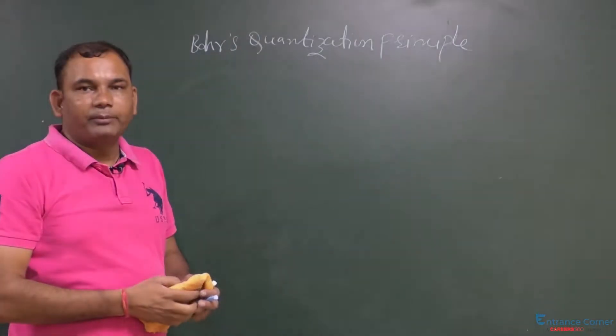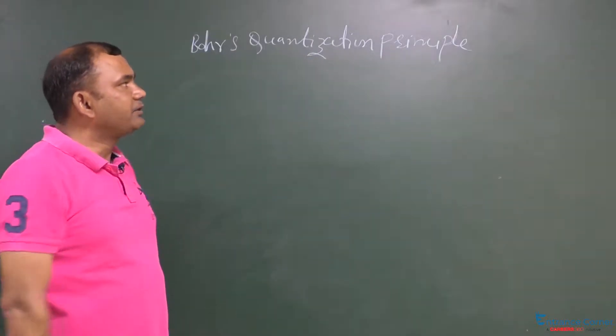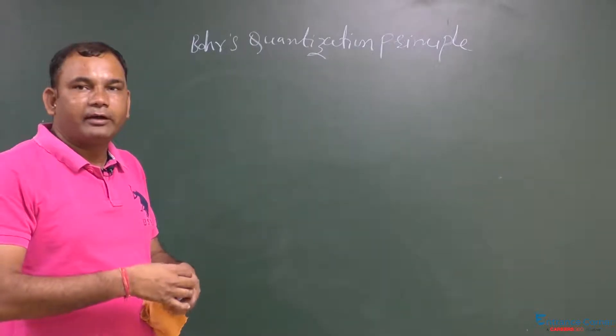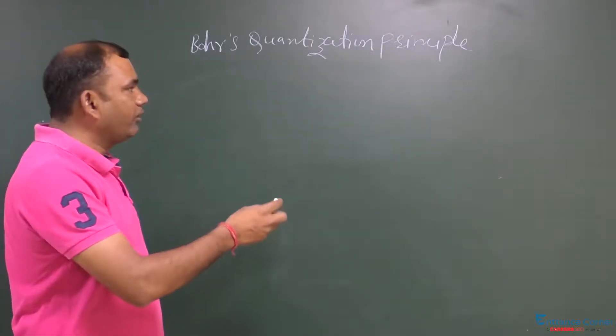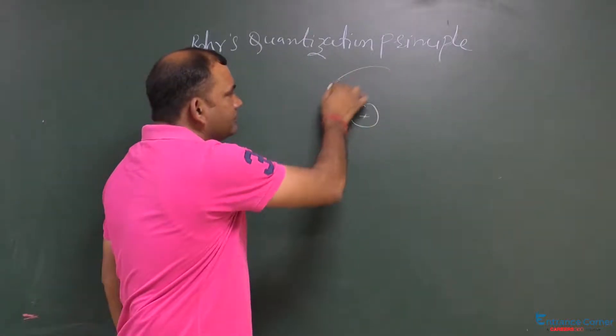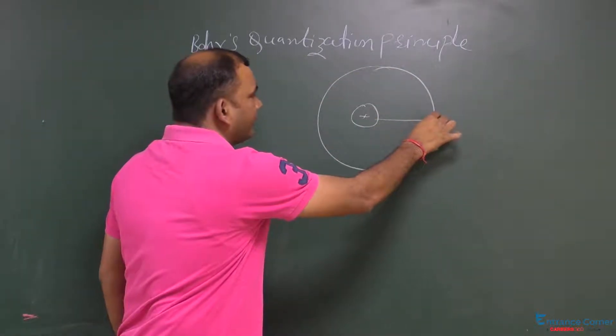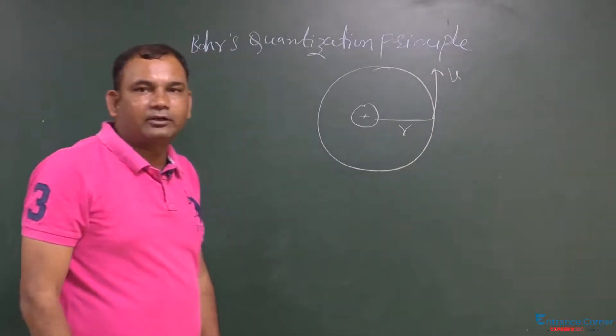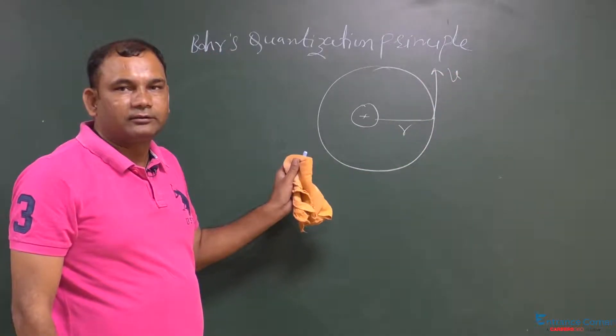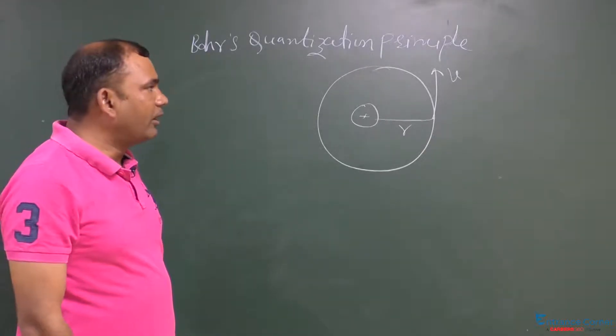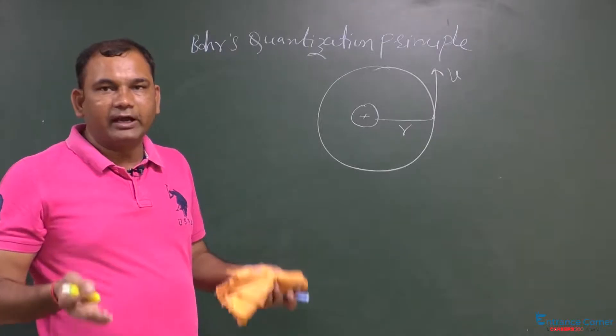Today's topic is quantization, Bohr's quantization principle. If an electron revolves around the nucleus with some speed v and radius r, then we define the angular momentum of the particle as m v r.